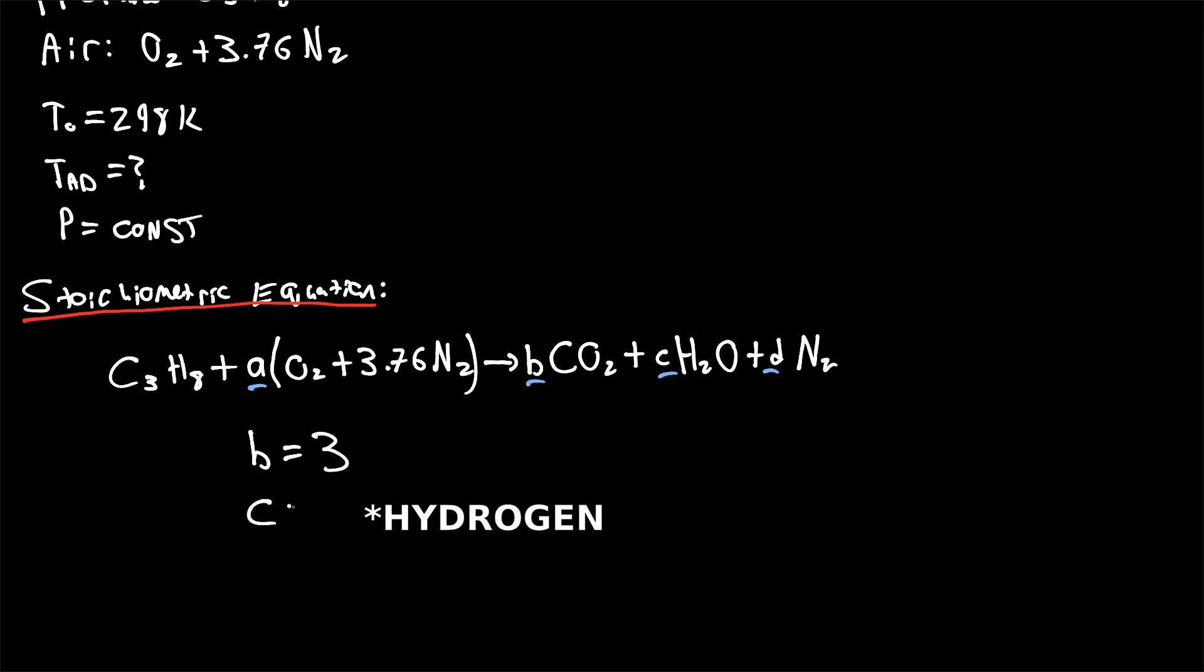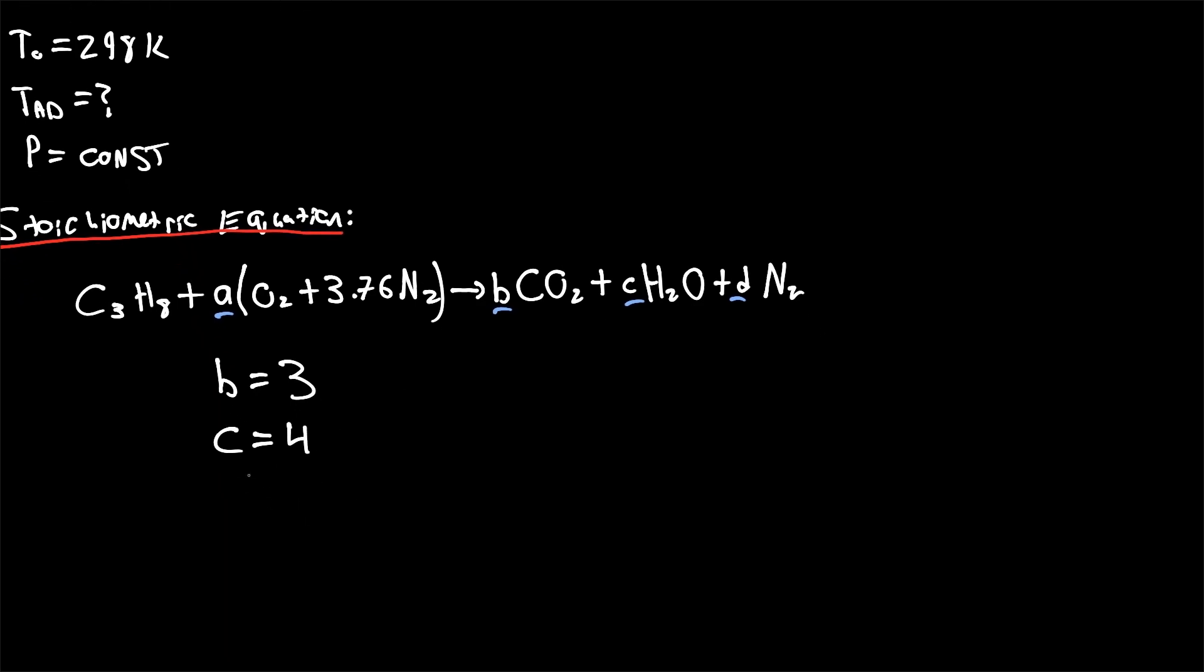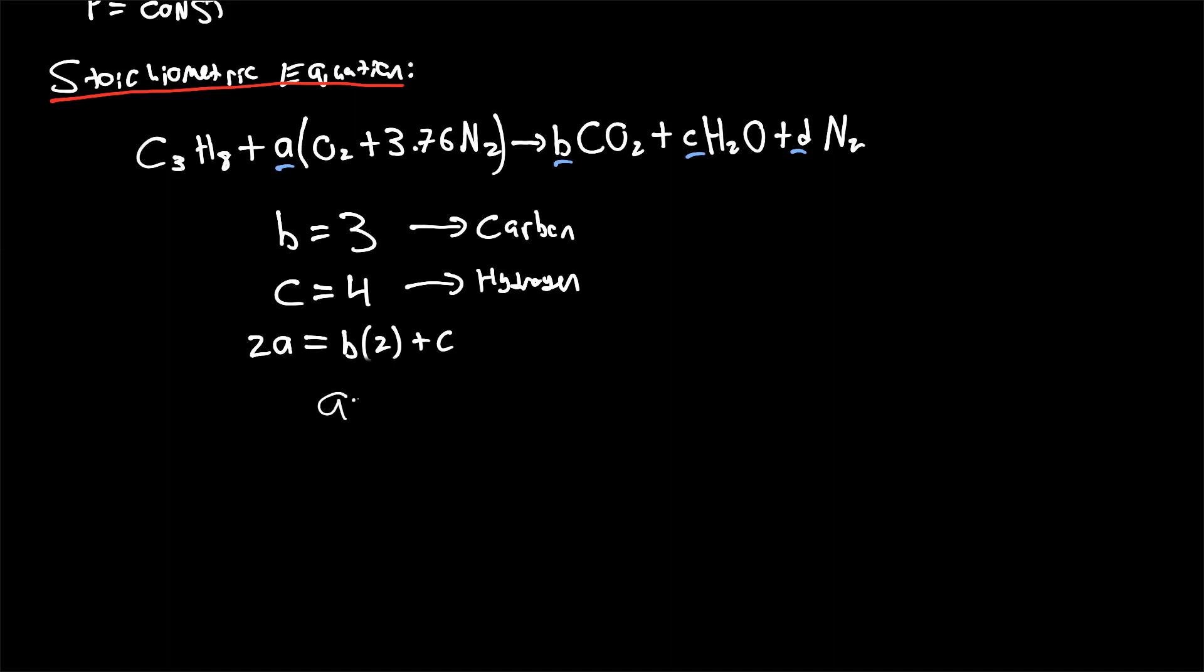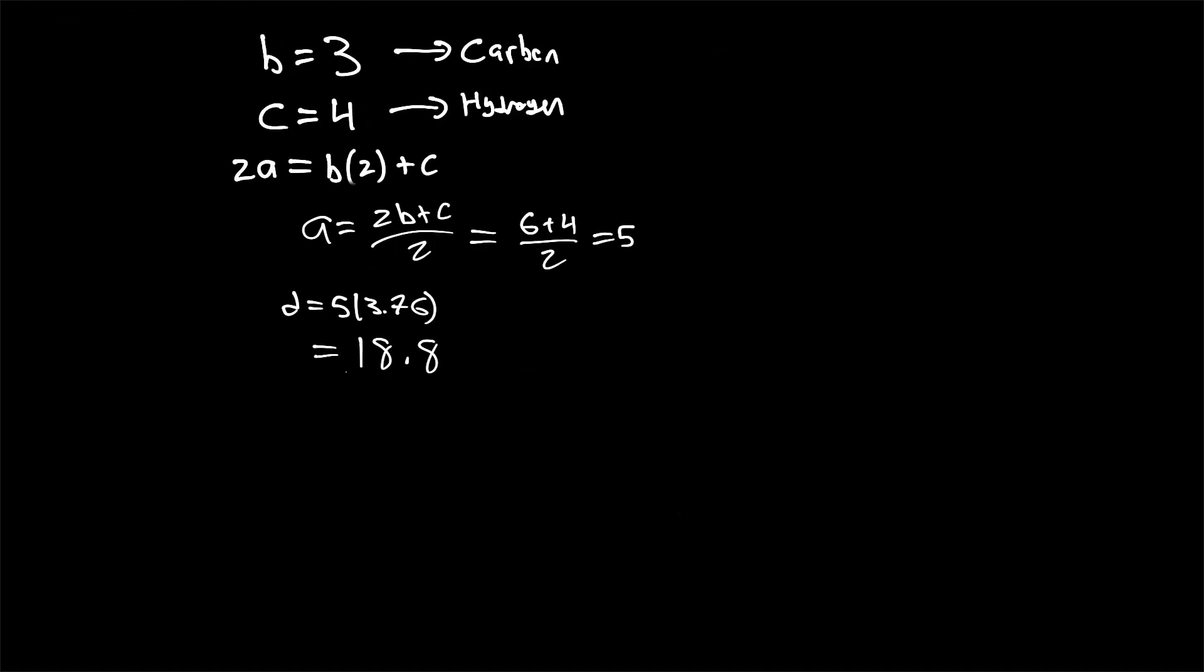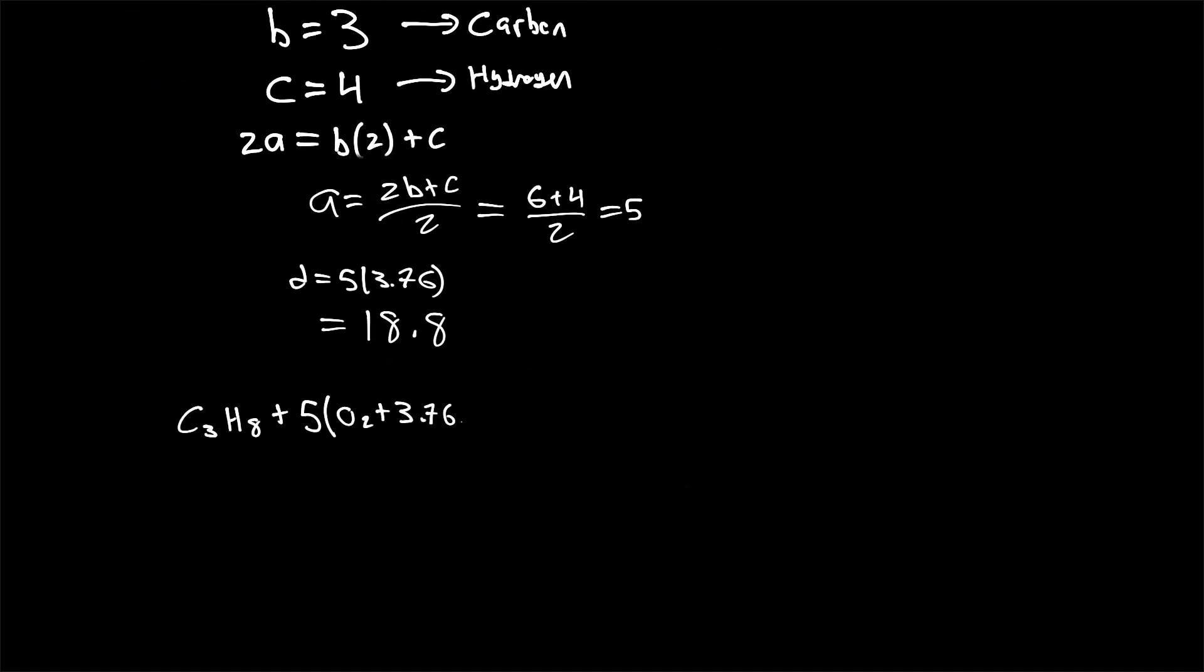We can compute a similar property with carbon. Based on the values of B and C we can therefore calculate A. So to calculate the value of A that's just going to be A equals 2B plus C over 2, that's just 2 times 3, 2 times 3 is 6, plus 4 divided by 2, that's equal to 5. And from that we can calculate the value of D, D equals 5 times 3.76. And therefore we can write our full stoichiometric equation using these ratios.